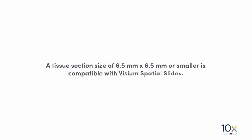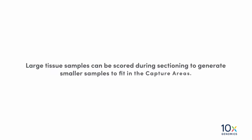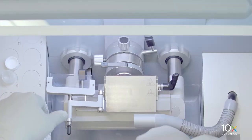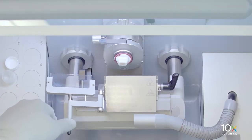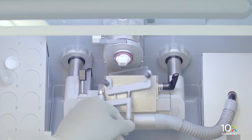A tissue section size of 6.5 mm x 6.5 mm or smaller is compatible with Visium Spatial Slides. Large tissue samples can be scored during sectioning to generate smaller samples to fit in the capture areas. Before scoring, remember to use an anti-roll plate to prevent rolling of tissue sections.